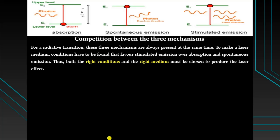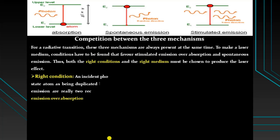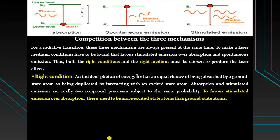Between these three mechanisms — stimulated absorption, spontaneous emission, and stimulated emission — all three are always present at the same time in a radiative transition. So for the laser medium, conditions must be found that favor stimulated emission over spontaneous emission and absorption. When a photon of energy hν is incident, it has an equal chance of absorption by a ground state atom and interaction with an excited state atom.